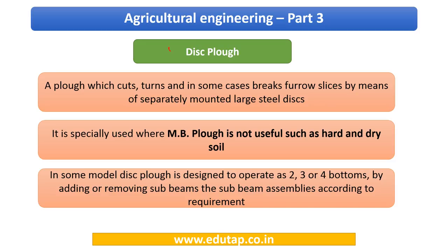The third primary tillage implement is the disc plow. As the name suggests, disc-like structures are used to break open the soil. An important point: where the MB plow cannot be used efficiently — for example, where the terrain is very hard or the soil is very dry — you would use the disc plow, because its shape makes it easier to cut into the soil. Like the MB plow, it can be two, three, or four bottoms — meaning two, three, or four discs cutting the soil.